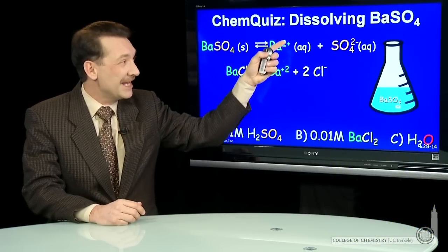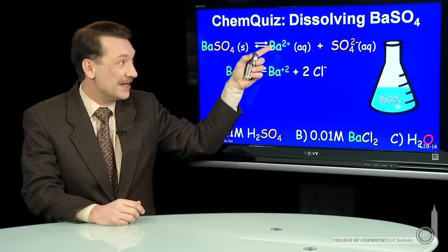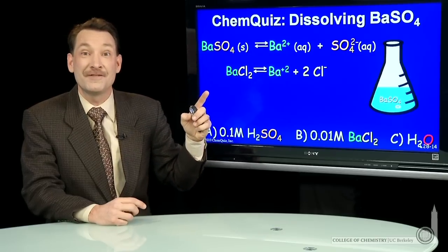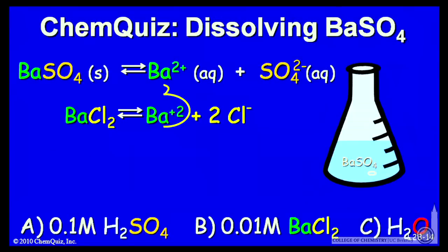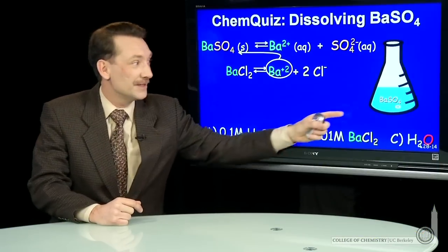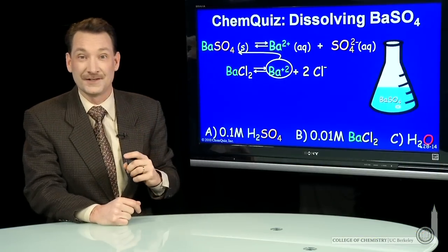So what you would be doing is adding an ion in common with an ion you already have there. And by Le Chatelier's principle, that would force the equilibrium back towards the solid. That would inhibit the formation of more ions. What you want is more ions to get this to dissolve.